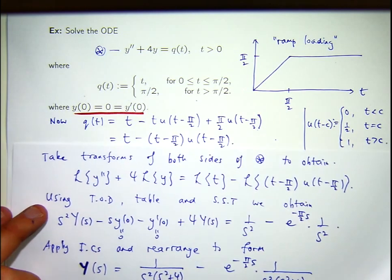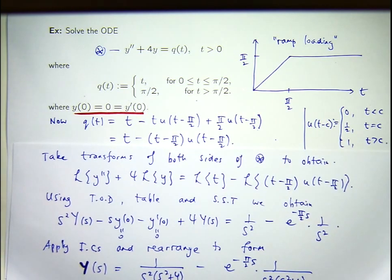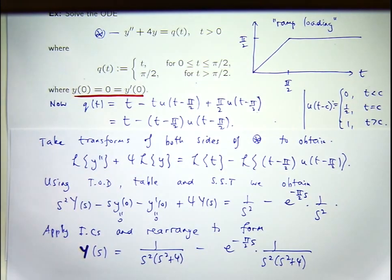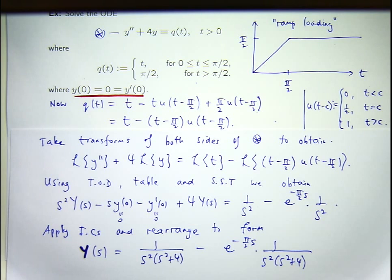Applying the initial conditions and rearranging, I've got a common factor. I make Y of S the subject by dividing both sides by S squared plus 4. So I've solved the transform problem. The tricky thing is getting everything back to the original setting — let's take the inverse transform and see how we go.